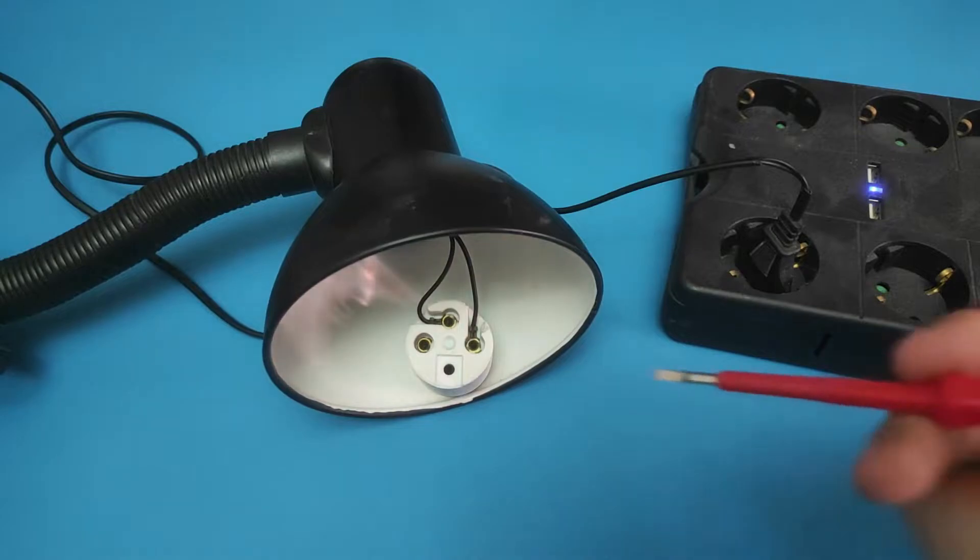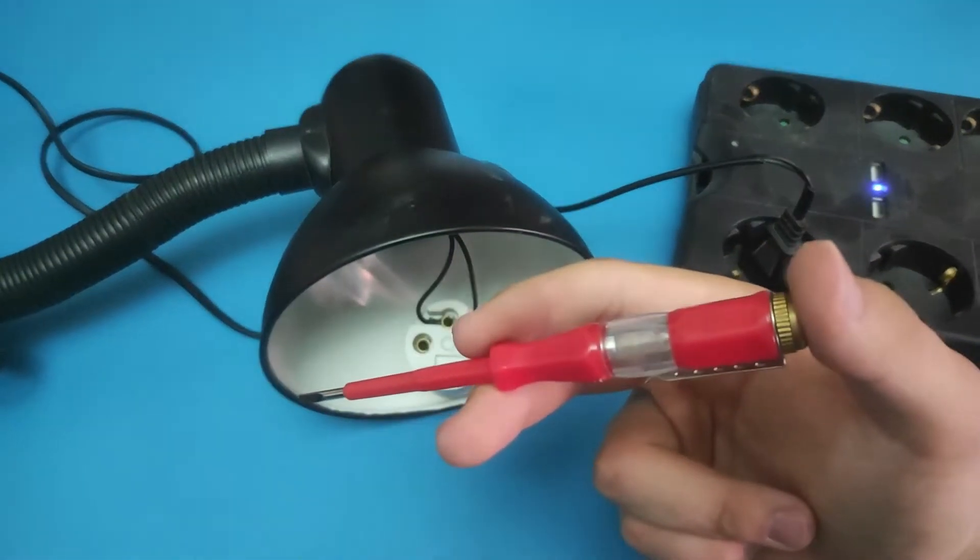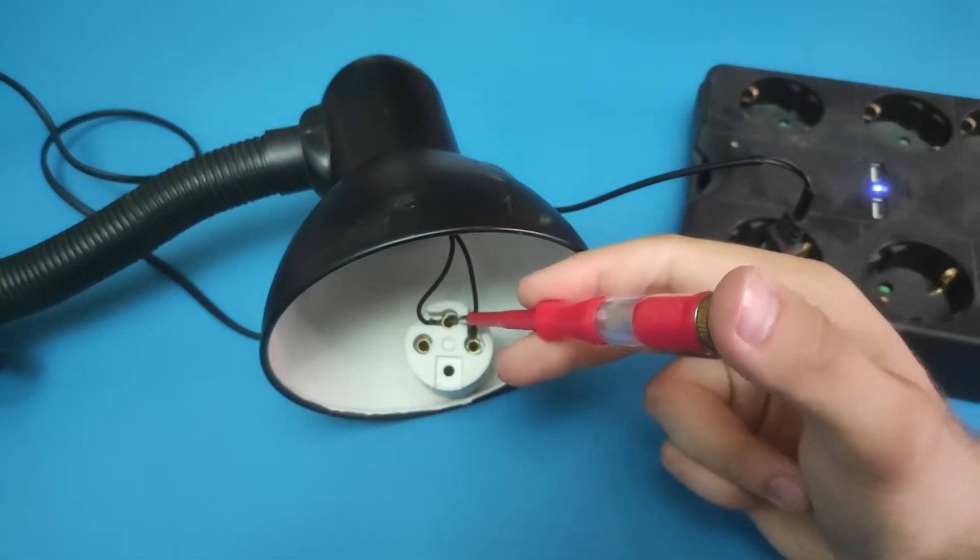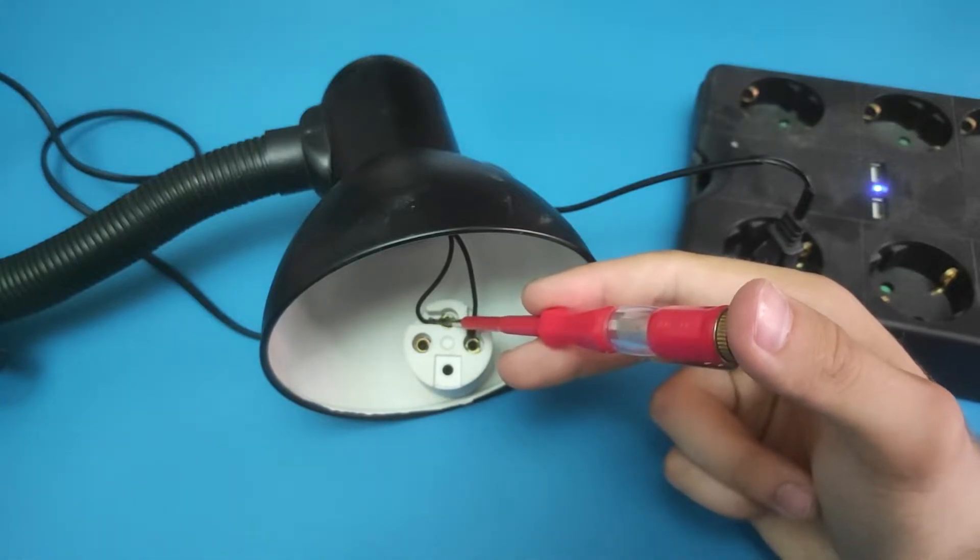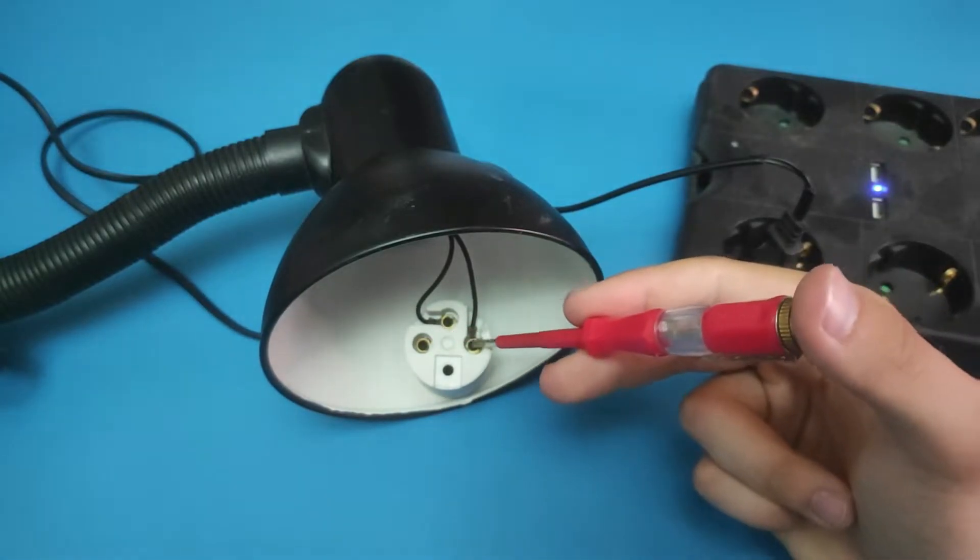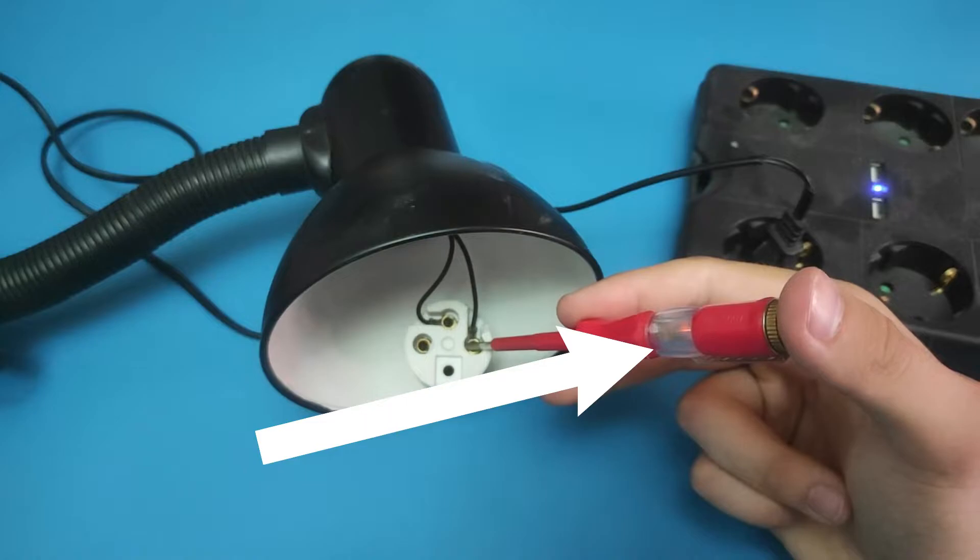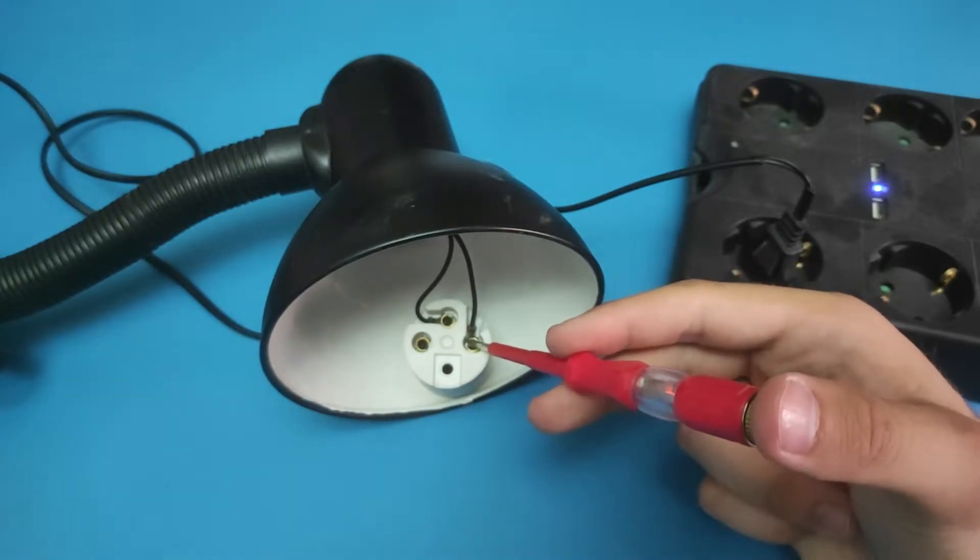All you need to do is attach a voltage tester at the cable's end. If the voltage tester starts to light up, it means that we have found a hot wire. You can see that I identified the hot wire.